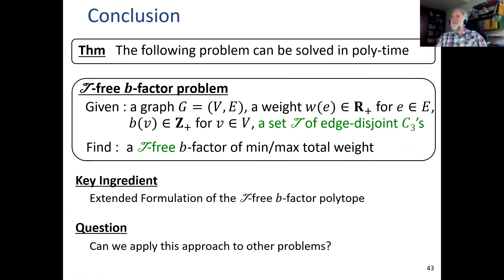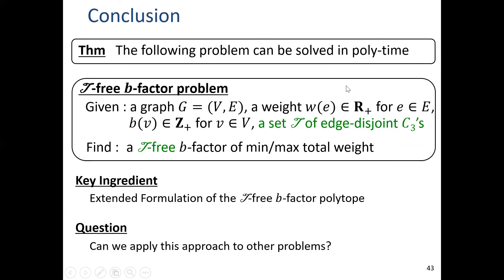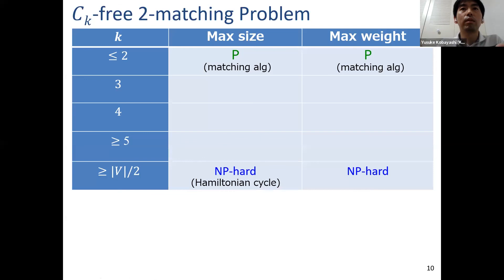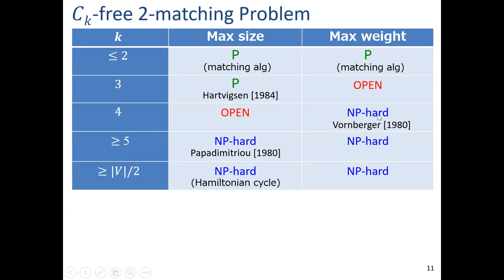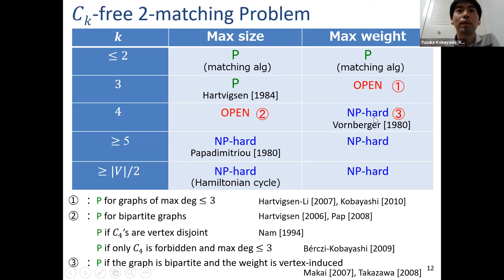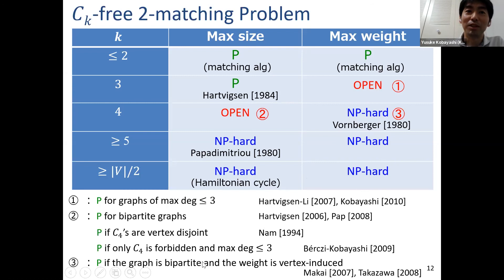Laura asks: what happens for larger values of k — can you extend these formulations? For example, what about k = 4? Yusuke replies: for k = 4, NP-hardness holds even when cycles are disjoint, so this approach doesn't directly extend. However, it may still work for some special cases, such as bipartite graphs or restricted weight functions.